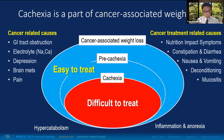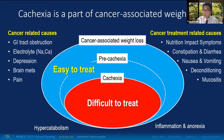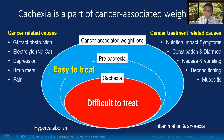From a broad perspective, cachexia is part of cancer-associated weight loss. The difficult-to-treat area is highlighted. In clinical practice, we have to treat the easy-to-treat area first, which includes cancer-related symptoms and cancer-treatment-related consequences, because we currently have very limited treatment options to reverse hypercatabolism, inflammation, and anorexia.